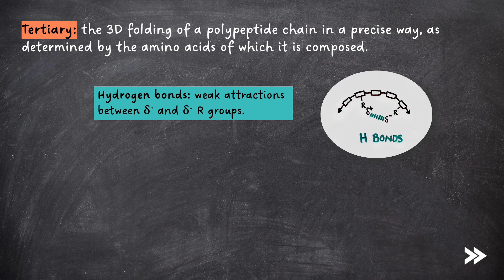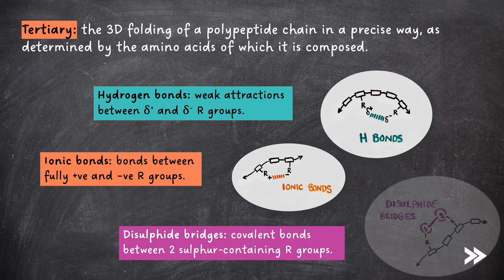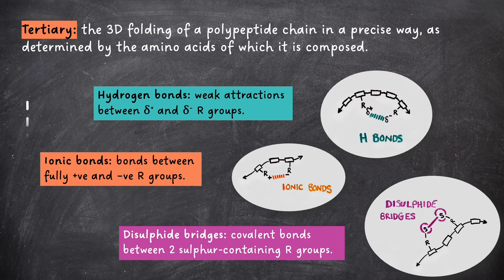We have ionic bonds, which are bonds between fully positive and fully negative R groups, as well as disulfide bridges, which are covalent bonds between two sulfur-containing R groups. So, I've ordered the bonds here in order of increasing bond strength, with a disulfide bridge being the strongest type of bond which determines the tertiary structure of proteins.